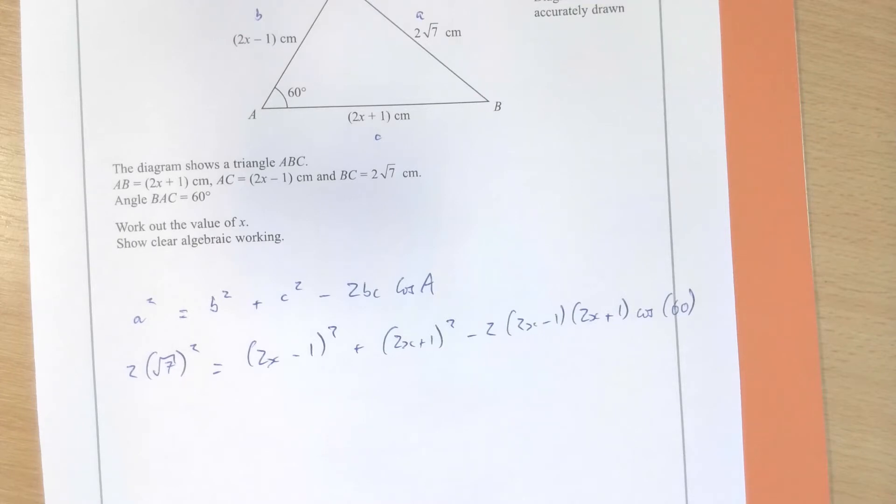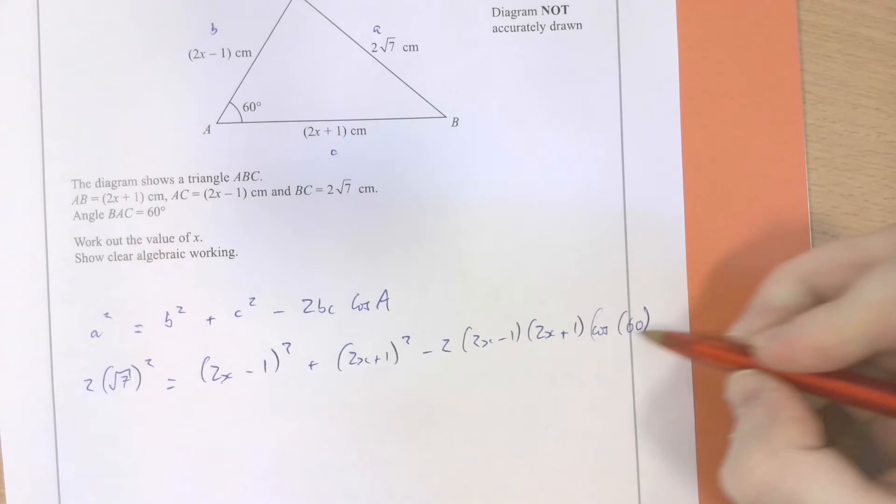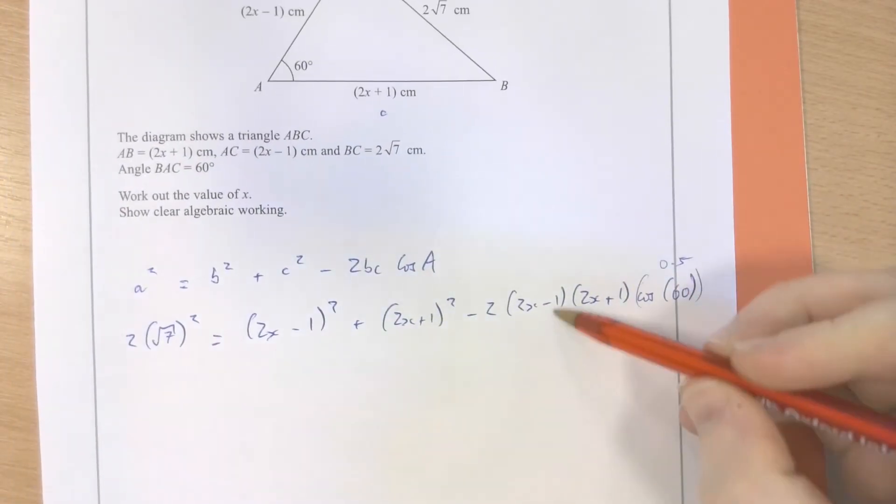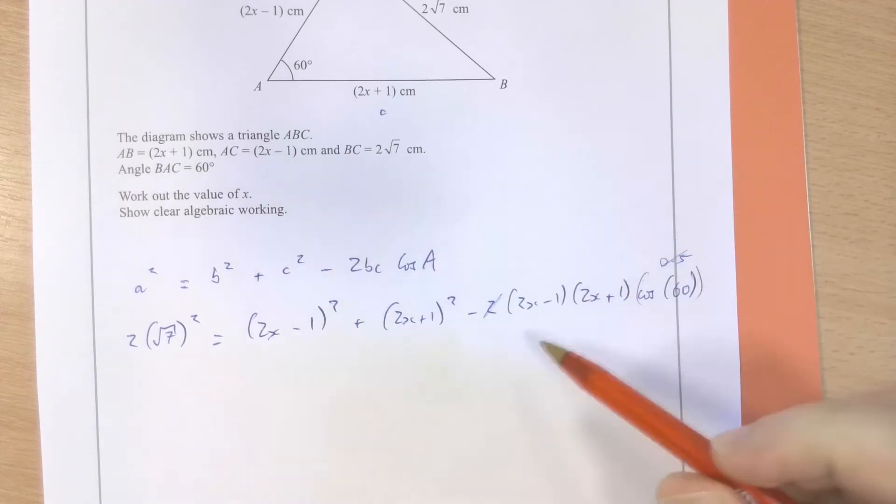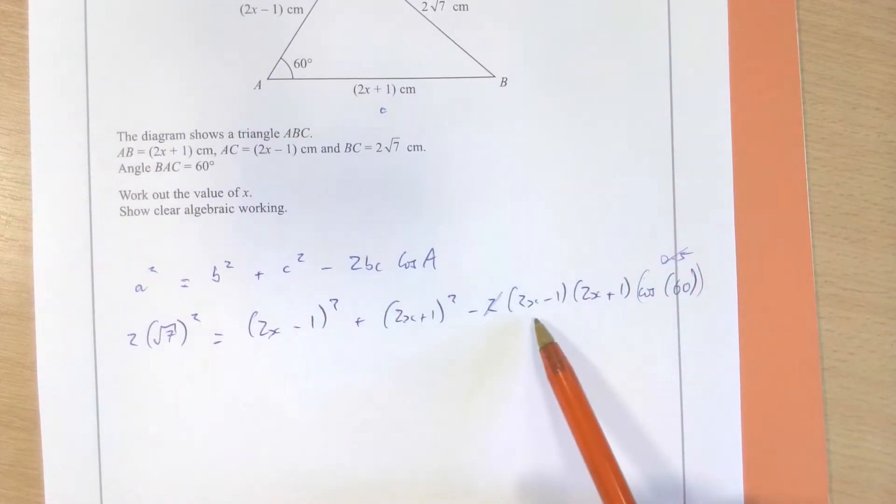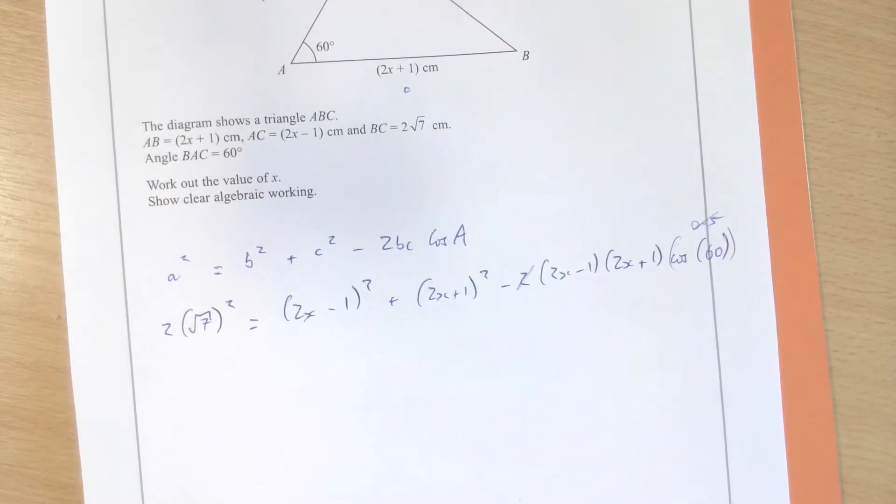Immediately, because cos 60 is a half, I can effectively consider that as 0.5. 2 being in front of all of this effectively cancels out, halves that 2 to 1. So, this is just going to become minus 2x minus 1, 2x plus 1. The rest is really just expanding and simplifying all of this algebra.